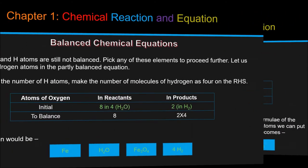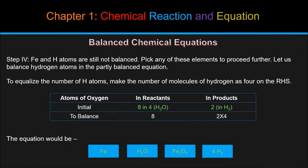Step 4: hydrogen atoms are still not balanced. Pick any of these elements to proceed further. Let us balance hydrogen atoms in the partly balanced equation. To equalize the number of H atoms, make the number of molecules of hydrogen as 4 on the RHS. Then equation would be Fe plus 4H2O equals Fe3O4 plus 4H2.